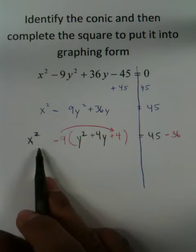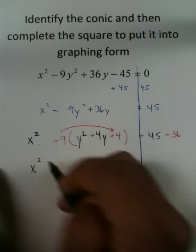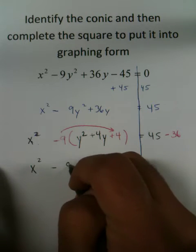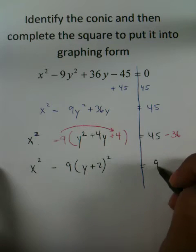We can't complete the square with this x squared because there's no other values of x, so we just leave it the way it is. We just say x squared. Then we have minus 9(y plus 2) squared after we factor, and this will equal 9.